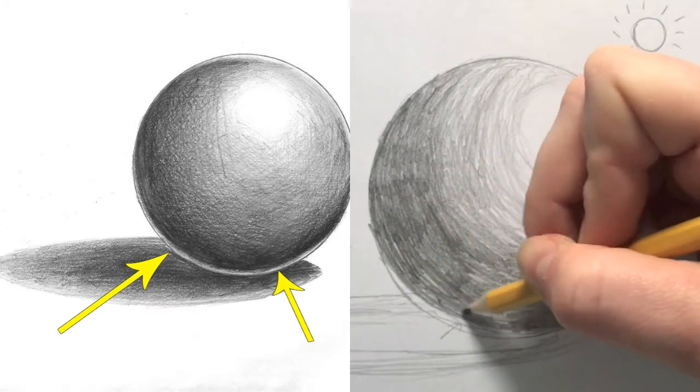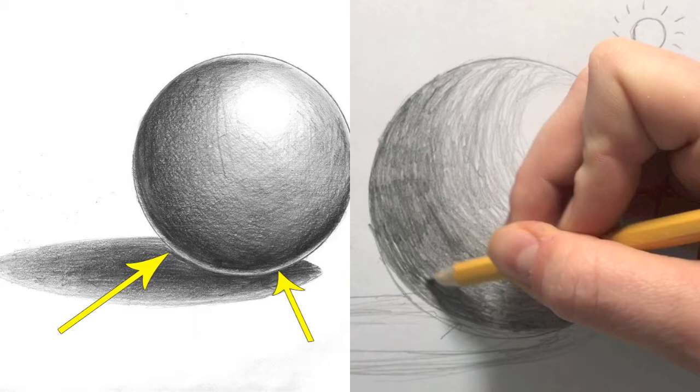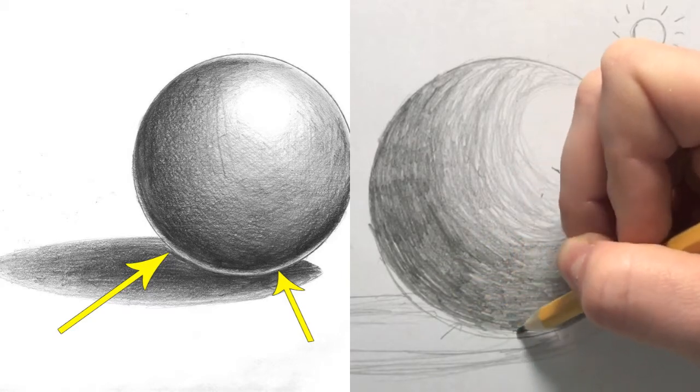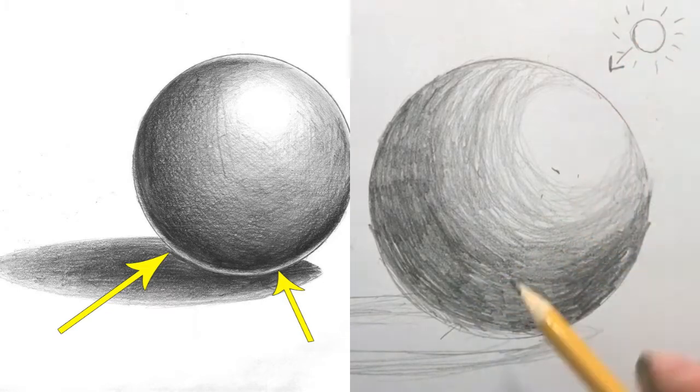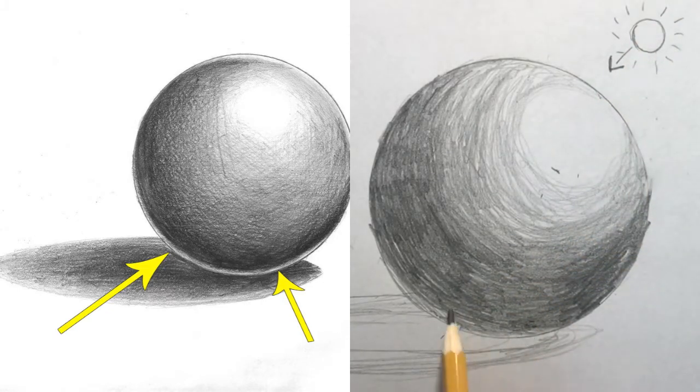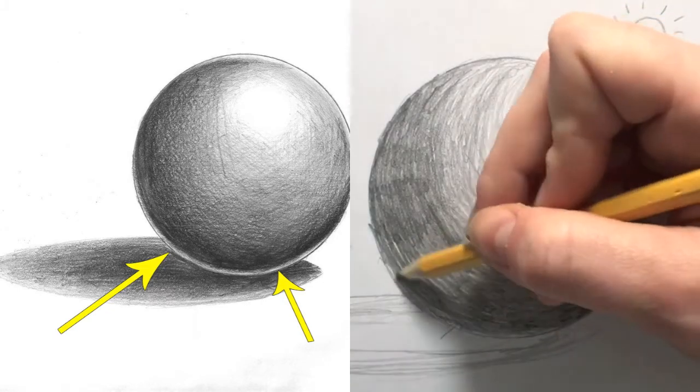This is because there is a little reflection of light from the table that hits the bottom of the sphere and causes it to be a little lighter. Shading that little slice makes a big difference in making this sphere look more realistic.